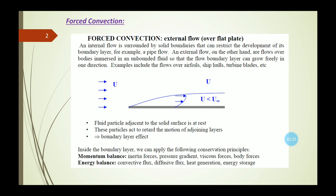External flows are flows over bodies immersed in an unbounded fluid so that the flow boundary layer can grow freely in one direction. Examples include flows over aerofoils, ship hulls, and turbine blades. In the diagram you can see the free stream velocity flowing over a flat plate where the boundary layer thickness gradually increases in the x direction. The fluid particle adjacent to the solid surface is at rest, retarding the motion of adjoining layers, which leads to the boundary layer effect.